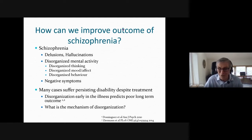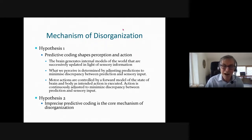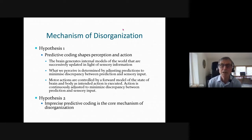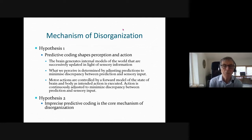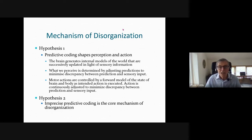I'm going to address two hypotheses. The first is the well-known, long-standing notion that predictive coding shapes perception and action. Originally proposed by von Helmholtz about 150 years ago, it has received a lot of attention among neuroscientists recently. The proposal is that the brain generates internal models of the world that are successively updated in light of the sensory information we receive from the external world.